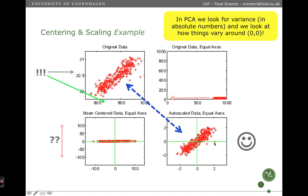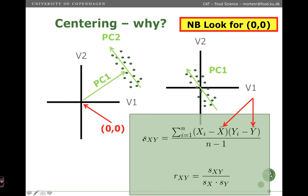Let's see how auto-scaling relates to the calculation of correlation. The correlation coefficient is based on the covariance: each variable is centered by subtracting the average, and this is done for both x and y to give the covariance. We then scale by the standard deviation of each variable. This is exactly what happens in auto-scaling — centering moves the data to the middle of the swarm, and scaling makes each axis representative of the total variation.